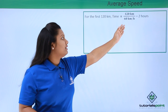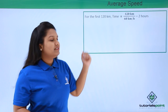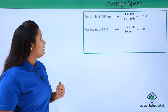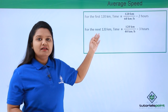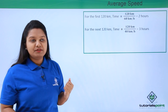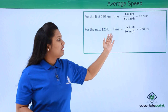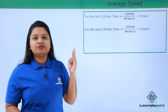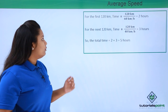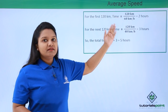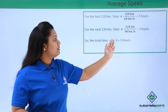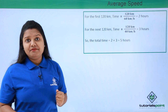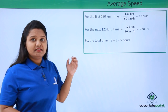The time for the first leg is 120 divided by 60, which is 2 hours. Similarly, for the next 120 kilometers at 40 kilometers per hour, the time becomes 120 divided by 40, which is 3 hours. So the total time for the entire trip is 2 hours plus 3 hours, which is 5 hours.